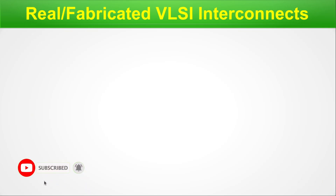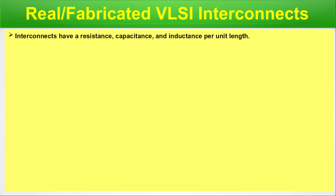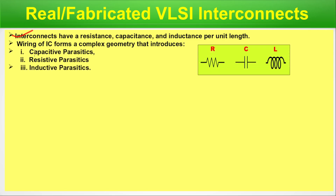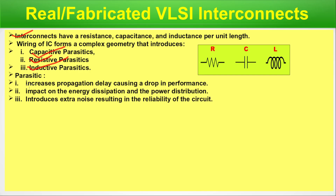Real or fabricated VLSI interconnects. Let's see how real or fabricated VLSI interconnects behave in the real world. Interconnects have resistance, capacitance, and inductance per unit length. The wiring of an IC forms a complex geometry that introduces capacitive parasitics, resistive parasitics, and inductive parasitics. All basic rules of electrical networking get applied.